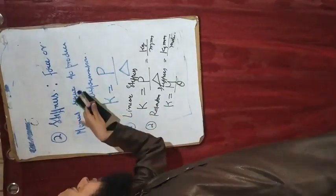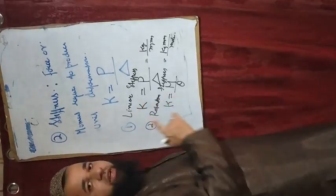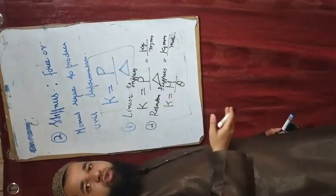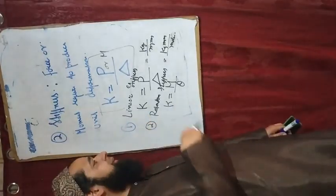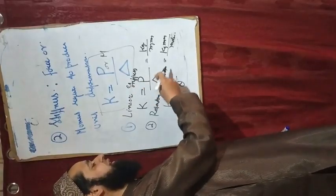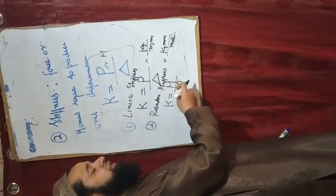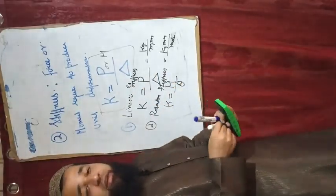How much force or moment you need to produce unit deformation — that is called stiffness. The general equation is: stiffness equals force or moment required to produce unit deformation. There are two types: linear stiffness (P divided by delta) and rotational stiffness (M divided by theta).